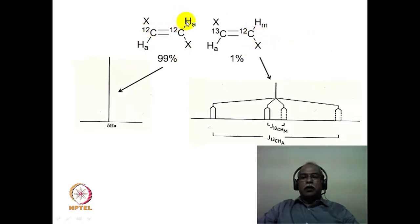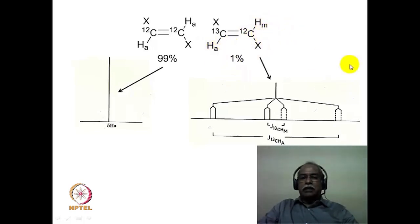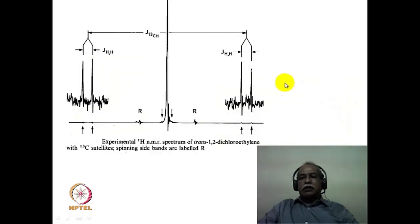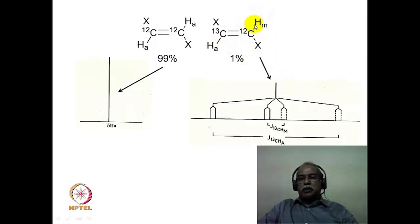What would be the spectrum of the carbon-13 isotopomer? In the carbon-12 molecule, the two hydrogens are chemically and magnetically equivalent, giving only one line. In the carbon-13 isotopomer, the two hydrogens are magnetically non-equivalent — they should be labeled A and A prime, not A and M. In the absence of carbon-13, only a singlet would appear. Because carbon-13 is present, the hydrogen directly attached to carbon-13 will have a large one-bond coupling of the order of 100+ Hz, splitting it into a doublet. That doublet is further split by the other hydrogen (which is magnetically non-equivalent), giving a doublet of doublets.